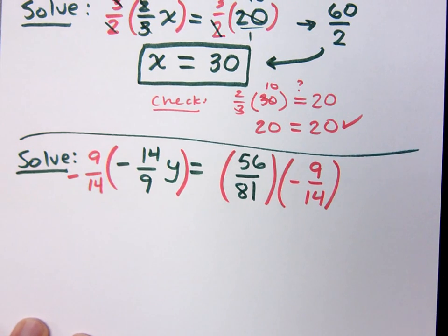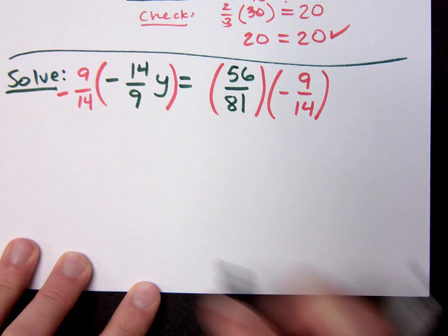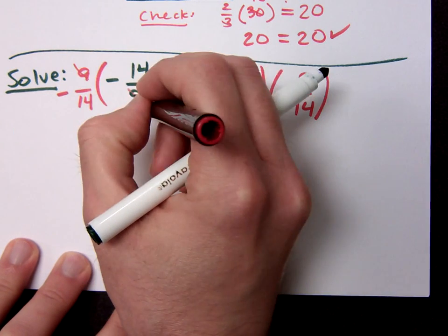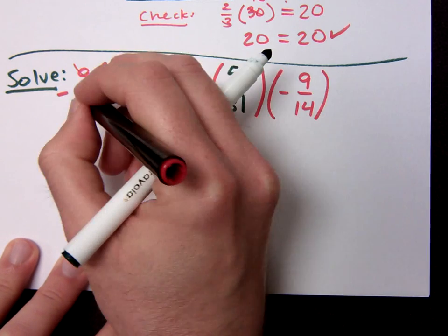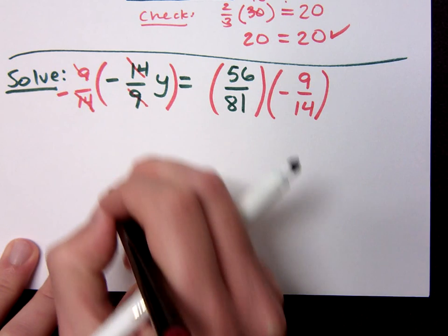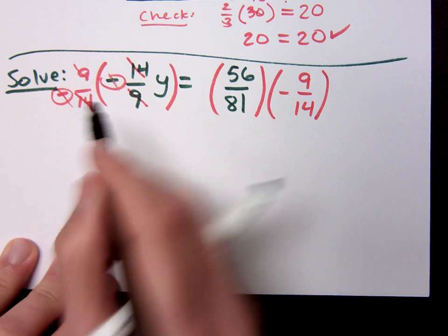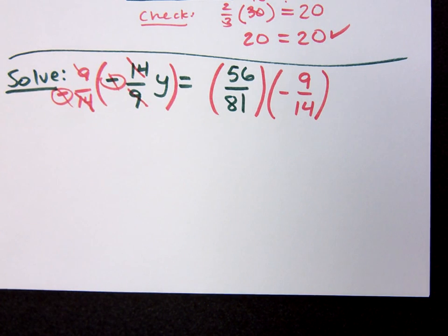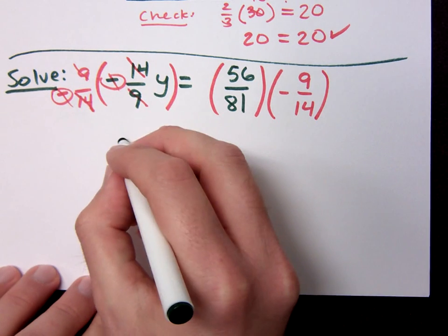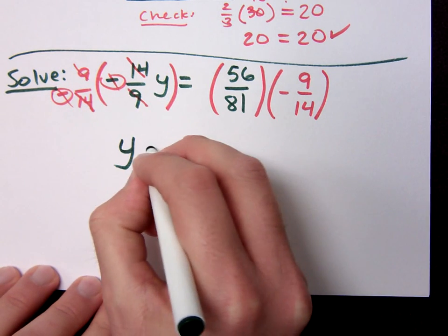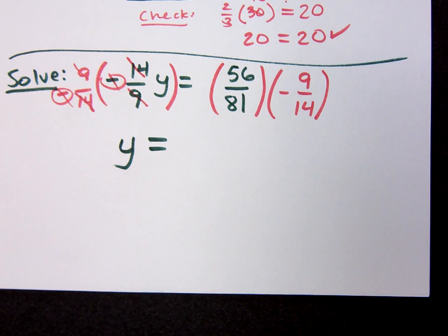Okay, so when I do this, the 9s reduce to give you 1, the 14s reduce to give you 1. These two negatives will also reduce, because what's negative times negative? Positive. So I'm going to be left with a positive y. Now on the right side, we've got to see how we're going to simplify this. Do you want to do 56 times 9? No. How can we reduce? 9 and 81.